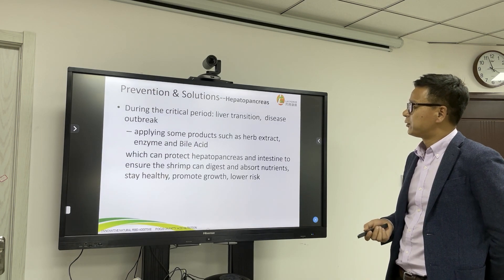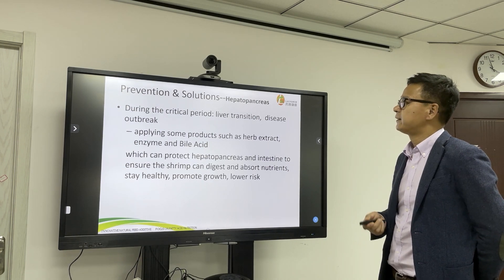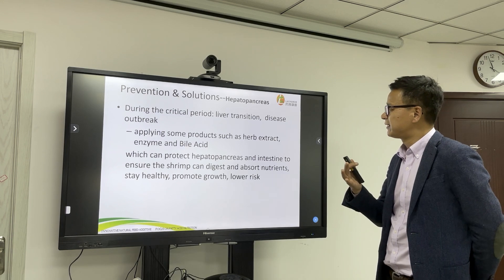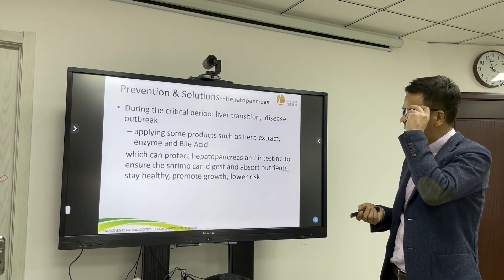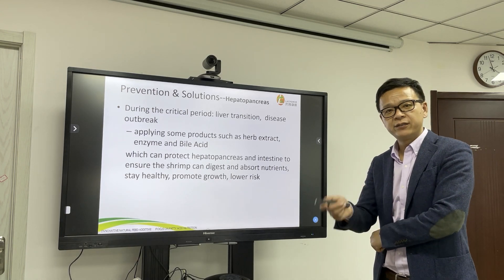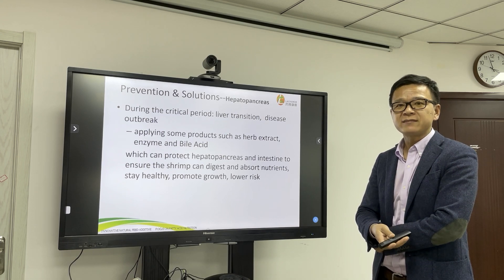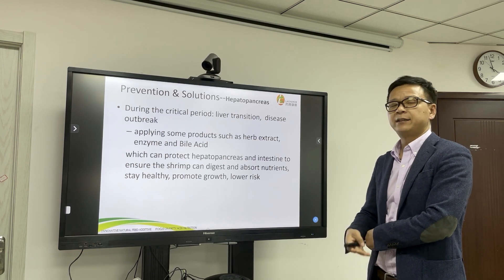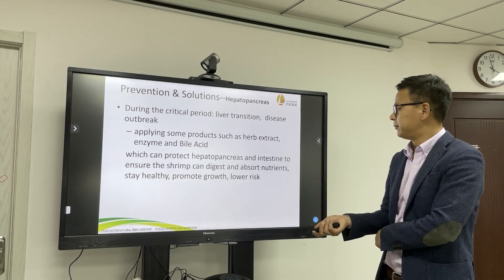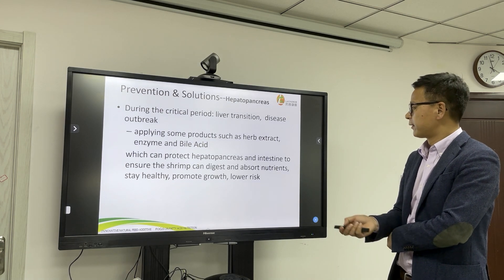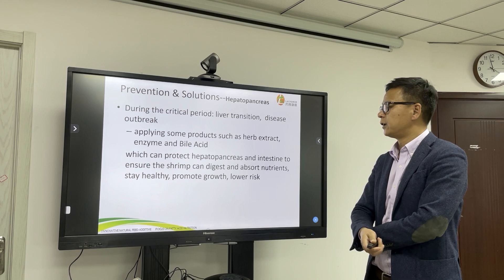It is also important to protect the hepatopancreas during critical periods such as liver transition and disease outbreak periods. Use products such as herb extracts, enzymes, and bioassays to protect the hepatopancreas and intestines. The hepatopancreas is the main organ for digesting lipids and absorbing nutrients — if it is damaged, nutrient absorption will definitely be affected and shrimp health will suffer. These products can also improve the immunity and promote the growth of shrimp.